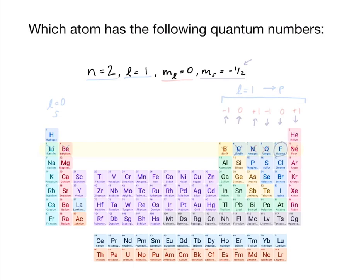Let's practice using the periodic table to determine the position of our atom based on its quantum numbers. The principal quantum number n tells us which row of the periodic table our element is located in. Since n equals 2, we know we're in the second row of the periodic table and it narrows us down to these eight elements.